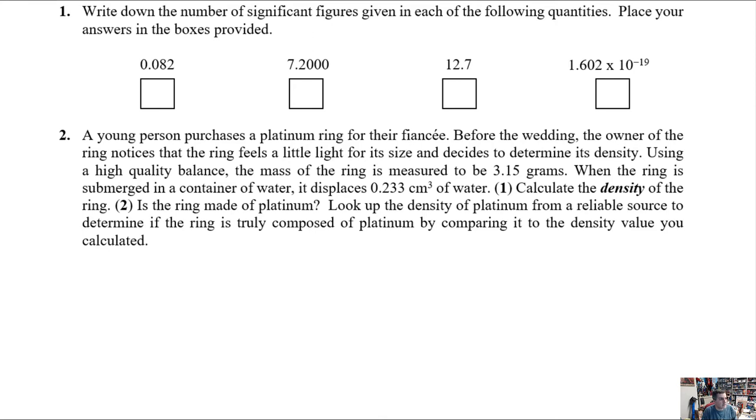This first one deals with sig figs. We always have to be careful to think about our rules for significant figures. Those are given to you in the textbook. Let's look at this first one here. It says write down the correct number of sig figs in each of the quantities. Here we've got this first one at 0.082. This rule says that any non-zero numbers are going to be significant. There are two right there. Then we have two zeros to the left and those are not significant.